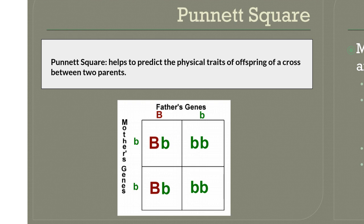A Punnett square is the square that you see at the bottom of the page here. This is used to help predict the physical traits or the characteristics of offspring, which are the children, of a cross between two parents.